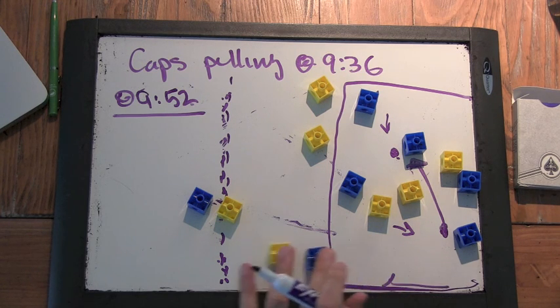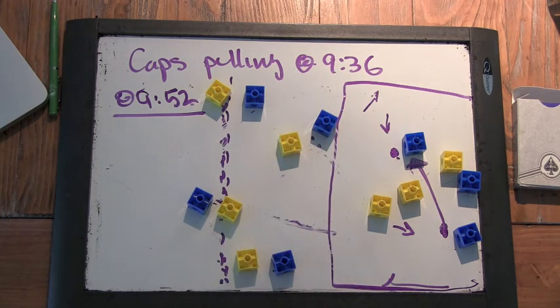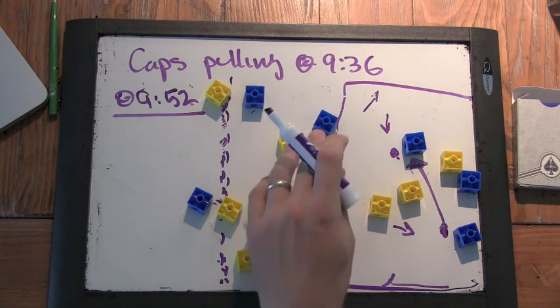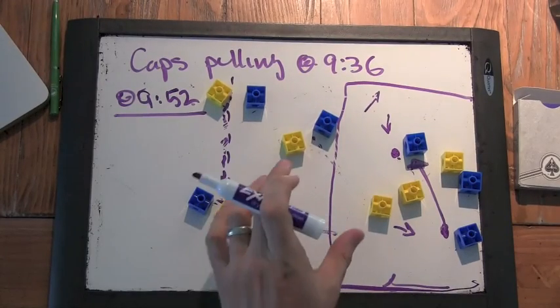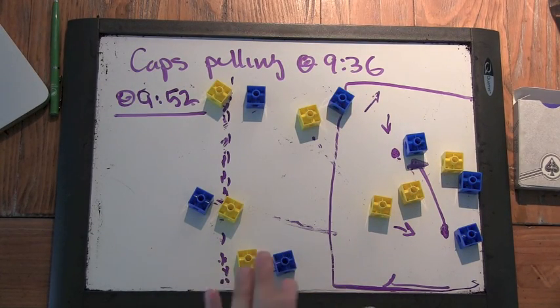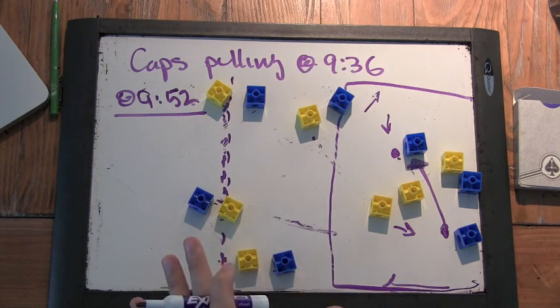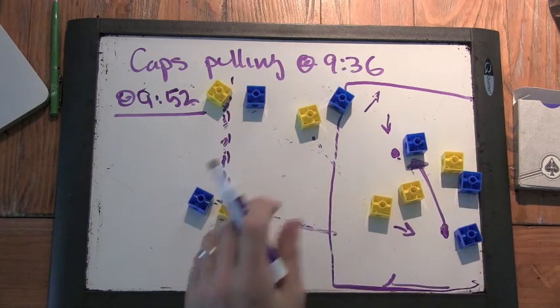But I want to see people getting downfield, spreading out the D, creating space. And now if that had been happening, then you would see here, oh wait a minute, this isn't the three cup that it seems like it is when you watch the film. They're matched up one on one downfield. And now we've got space. Now we can figure it out.